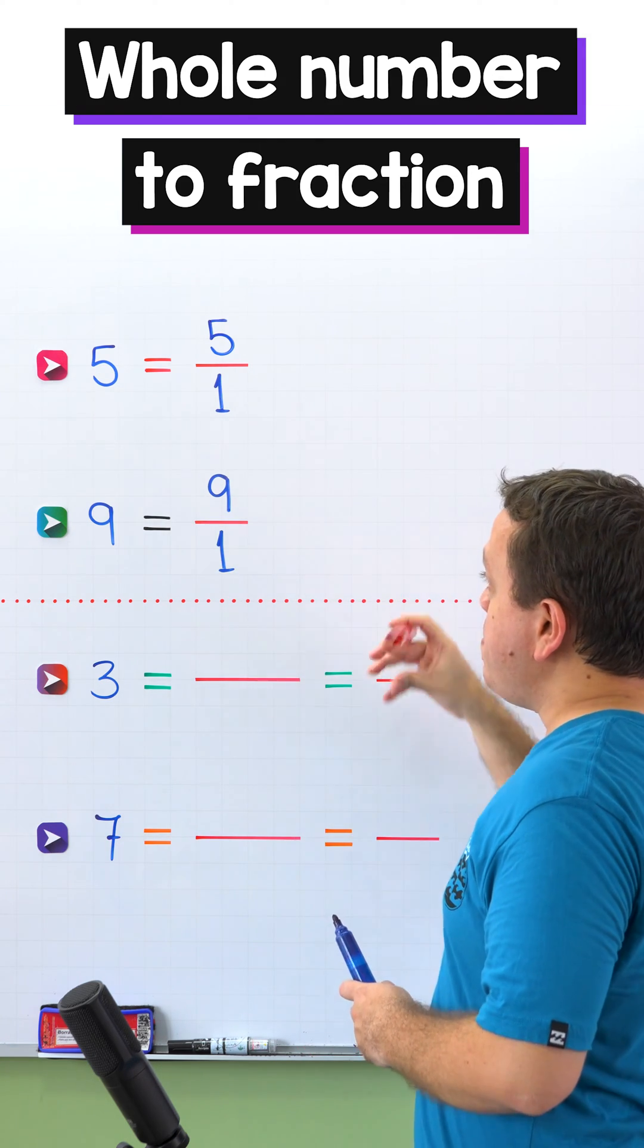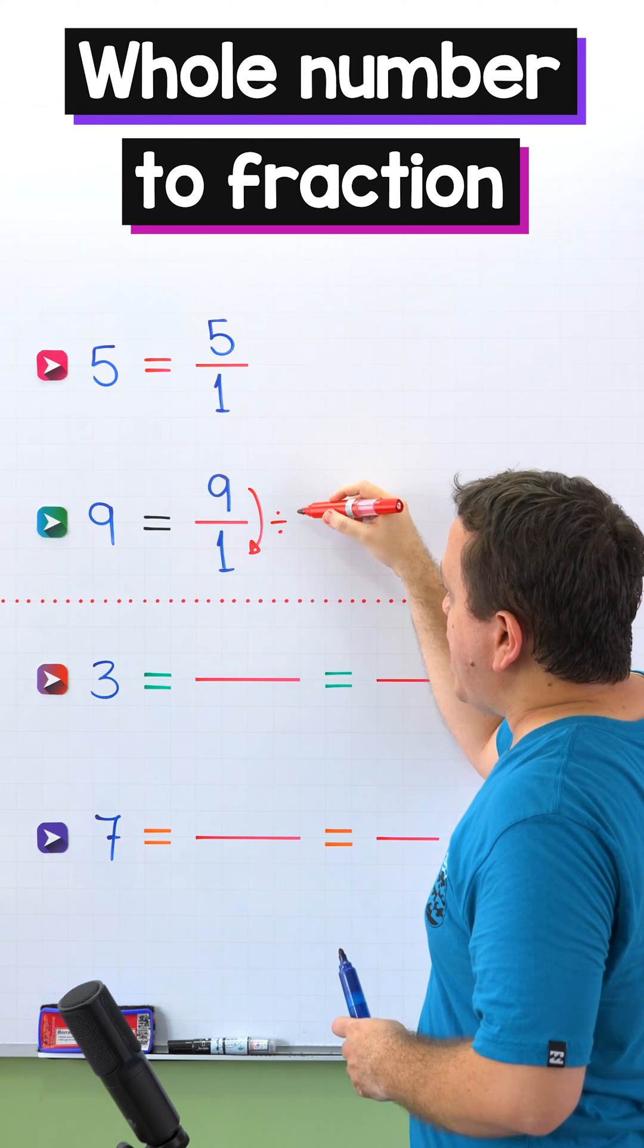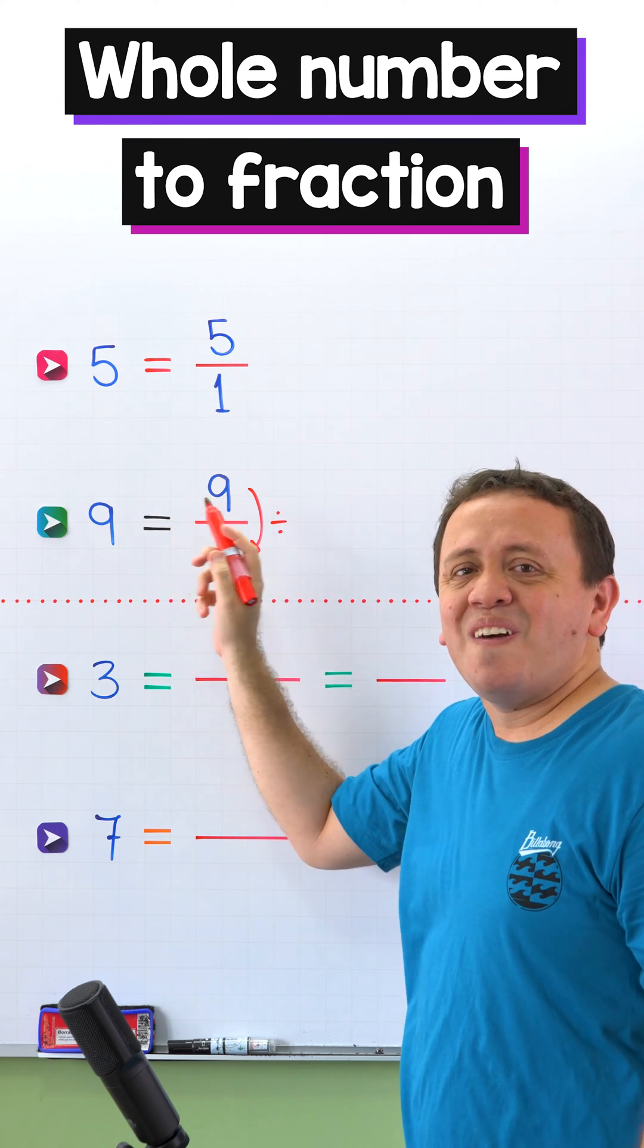To check the answer, just remember that we can also see a fraction as a division, and 9 divided by 1 equals 9, our original number.